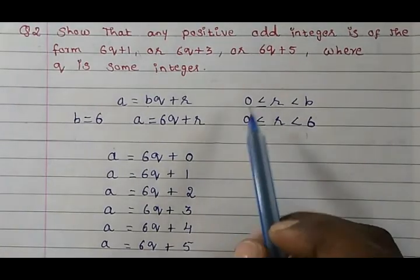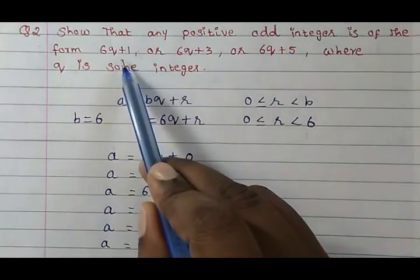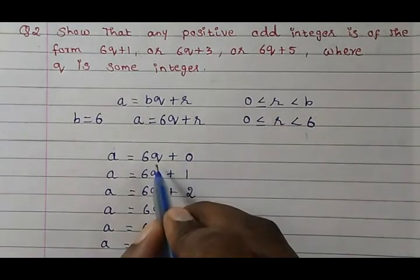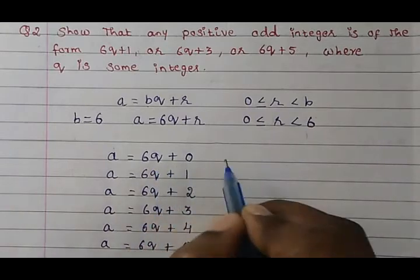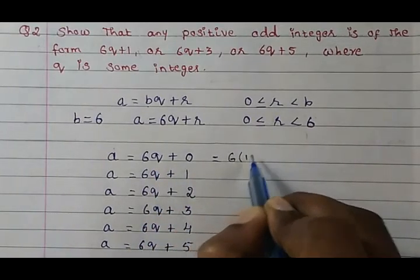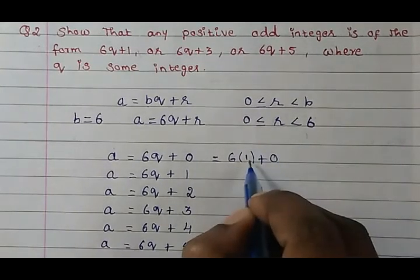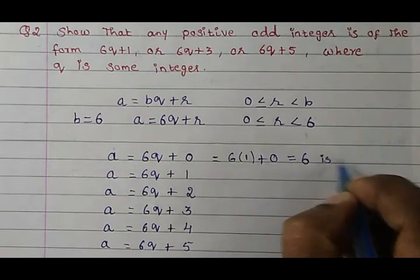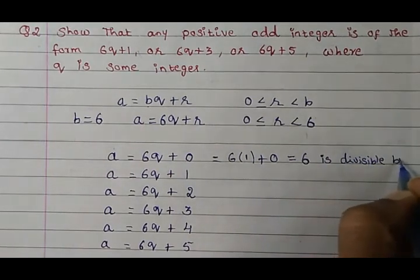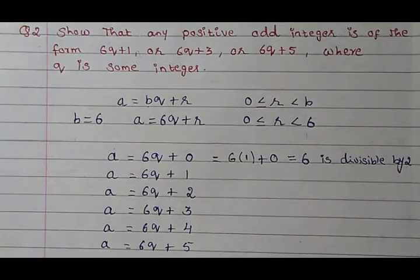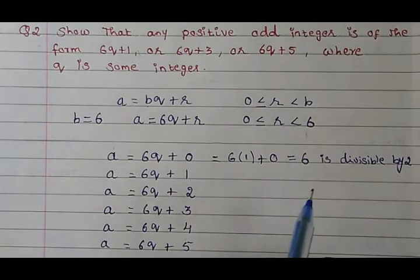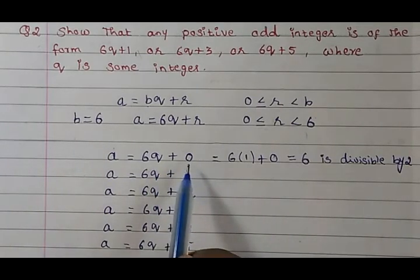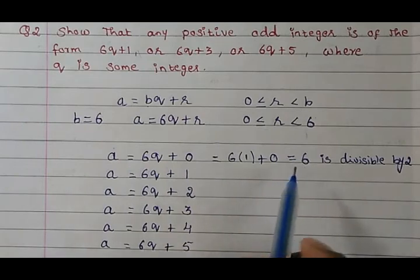Now what we have to show is any positive odd integer is in this form that is given to us. So let's see. q is some integer they have said. So in the place of q put some integer. For example, we will put it 1. Now 6×1 = 6 plus 0 will be 6 which is divisible by 2.